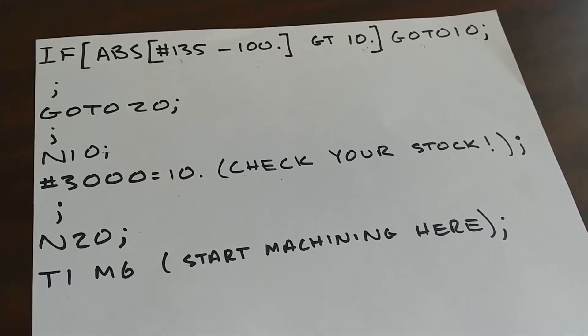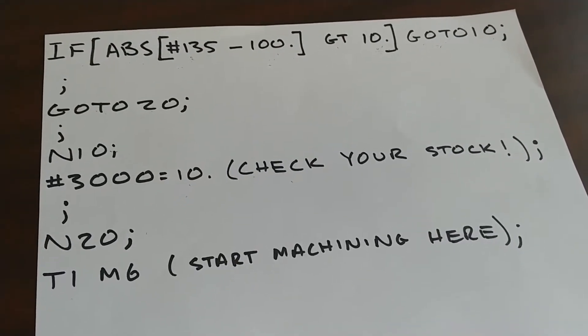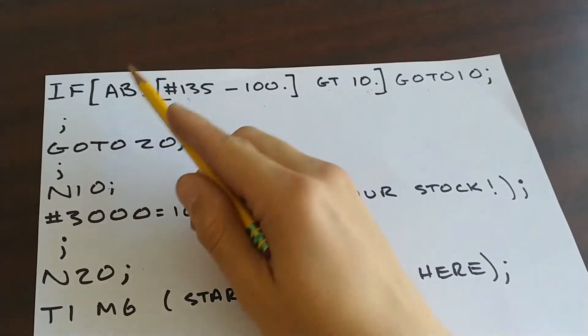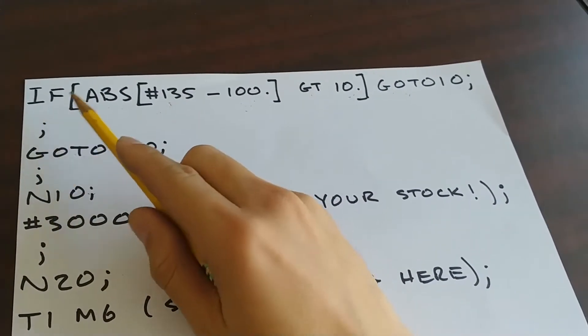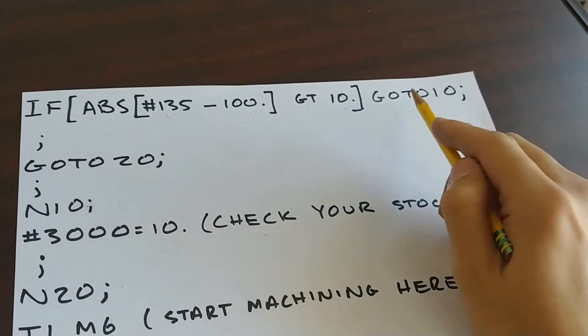Okay, so this is the code that will either continue on if the stock is good or alarm out if it's bad. We start with the if statement, which is the logic behind this. If whatever is in these brackets is true, then we will do this.